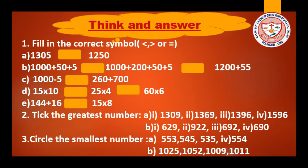Number 2: Take the greatest number. A: 1,309 / 1,369 / 1,396 / 1,596. B: 629 / 922 / 692 / 690. Number 3: Circle the smallest number. A: 553 / 545 / 535 / 554. B: 1,025 / 1,052 / 1,009 / 1,011.